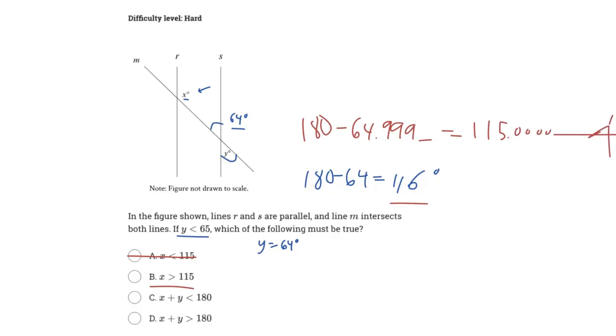That's messy, but you get the point. So basically we can't ever go underneath 115 degrees for X if Y is less than 65. Therefore, B is our answer, but let's just check the other answers to be sure.